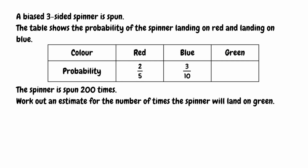For the next question, a biased three-sided spinner is spun. The table shows the probability of landing on red is 2 fifths and landing on blue is 3 tenths. The spinner is spun 200 times and we need to estimate the number of times it lands on green. First, we need to find the probability of landing on green by adding the known probabilities and subtracting from 1. To add the fractions, we need a common denominator — the lowest common multiple of 5 and 10 is 10.